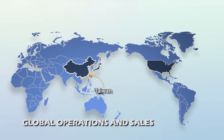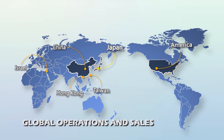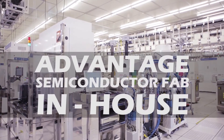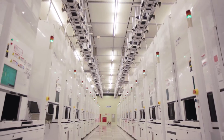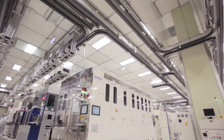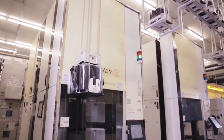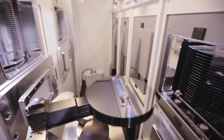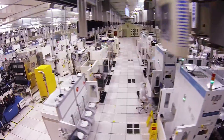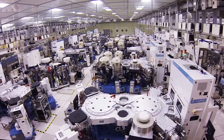WinBond is headquartered in Taiwan. We have branches in China, Hong Kong, Israel, Japan, and the USA, and we have customers located around the world. Because we have the advantage of operating our own semiconductor fab, we are able to provide vertically integrated production planning, which results in very stable delivery and outstanding quality. WinBond Electronics continues to improve product quality, to accelerate process development and to advance the art of automation. We provide our customers with stability, flexibility, and a wide range of high-quality IC memory products.